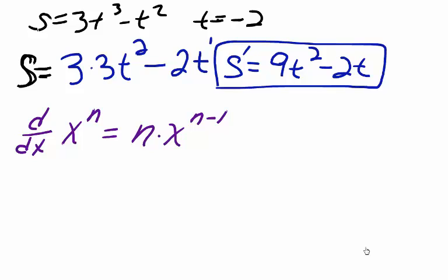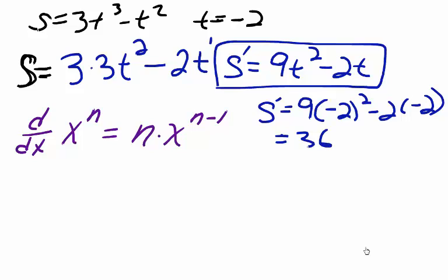To find the slope of the tangent line at t equals negative 2, we simply evaluate our derivative where t equals negative 2 by substituting negative 2 in place of all t, so 9 times negative 2 squared minus 2 times negative 2. Simplifying, we get 36 plus 4, which equals 40.